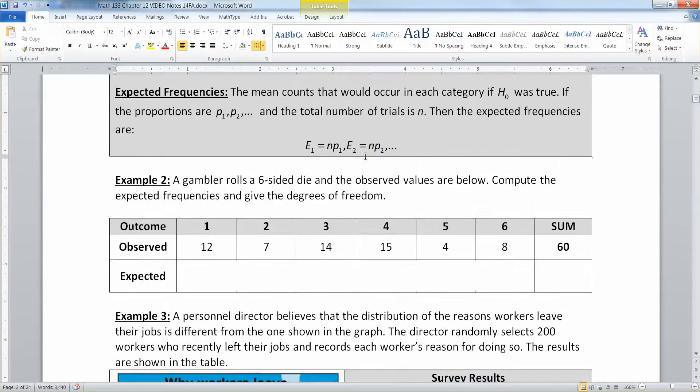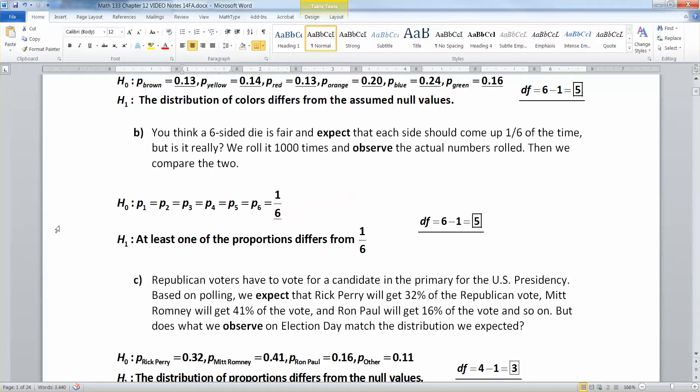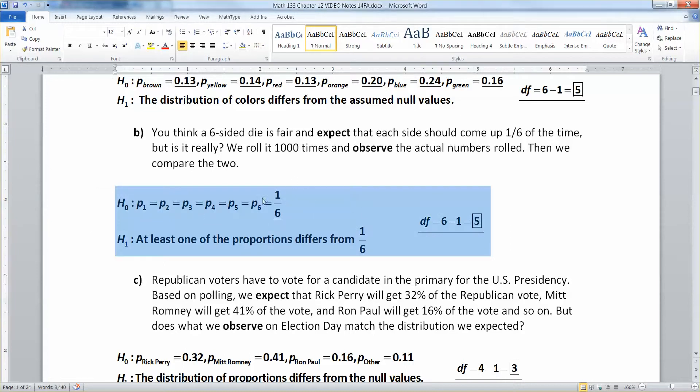Let's look at this example here. We have a gambler rolls a six-sided die, and the observed values are below. So he rolled the die and they got a 1 twelve times, a 2 seven times, a 3 fourteen times, and so on. And you look at those numbers and you think, oh, those aren't really all equal to each other. So the question is, is this die fair or not? Now we assumed up here that the die is fair. You assume that going into it, which means you expect each side to appear about one-sixth of the time. And you use that proportion to figure out your expected values.